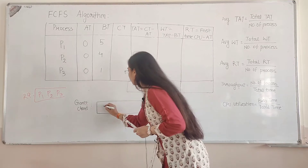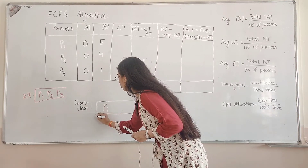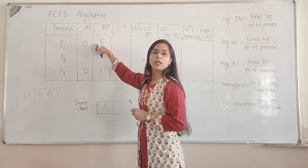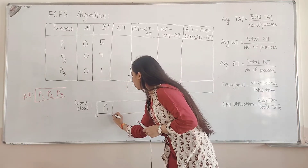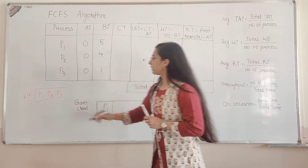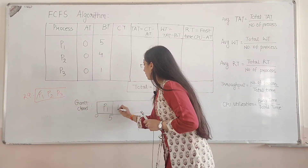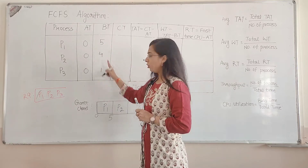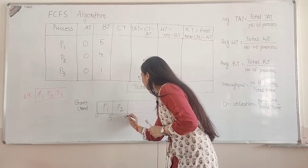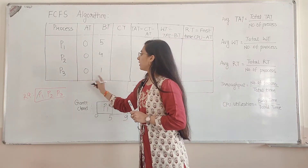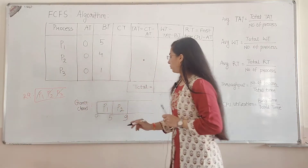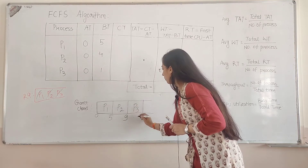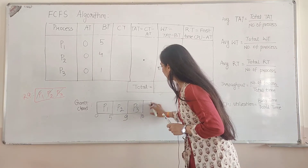First we have process P1, which starts at 0 unit of time. The burst time of P1 is 5, so it runs until time 5. Next, from the ready queue we pick P2. P2's burst time is 4, so we add 4 to 5, giving us 9. Next, we pick P3, which has a burst time of 1 unit. We add 1 to 9, giving us 10.